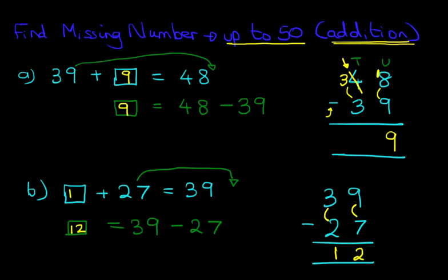And we can write this in the original question. So 12 plus 27 equals 39. So that is how we find the missing number for numbers up to 50 when we are looking at addition questions.